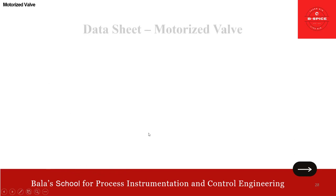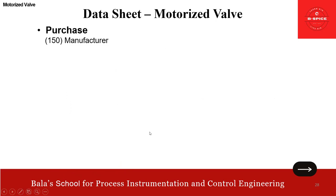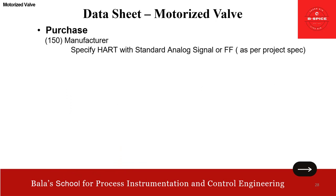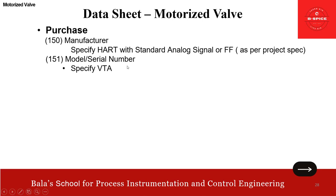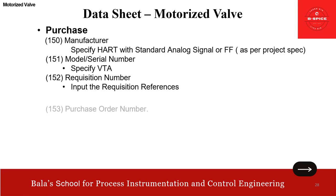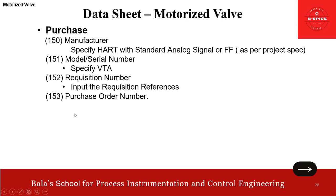Then the purchase requirements — this is a very routine thing. Manufacturer model and serial number — specify VTA. Requisition number — input the requisition references. And of course, purchase order number — input the PO references. Note: for manufacturer, we should put VTA; there is some item copied from the previous slide that came in here by mistake — apologies for that. Then we move on to the last topic but not the least: special requirements.